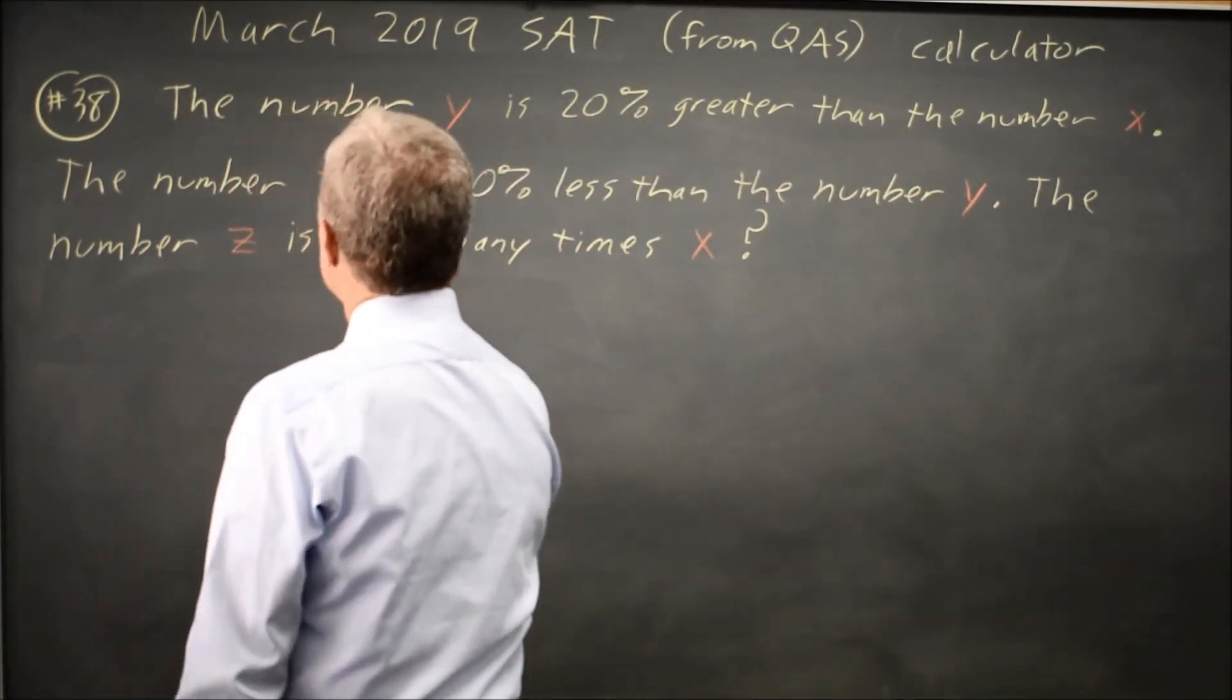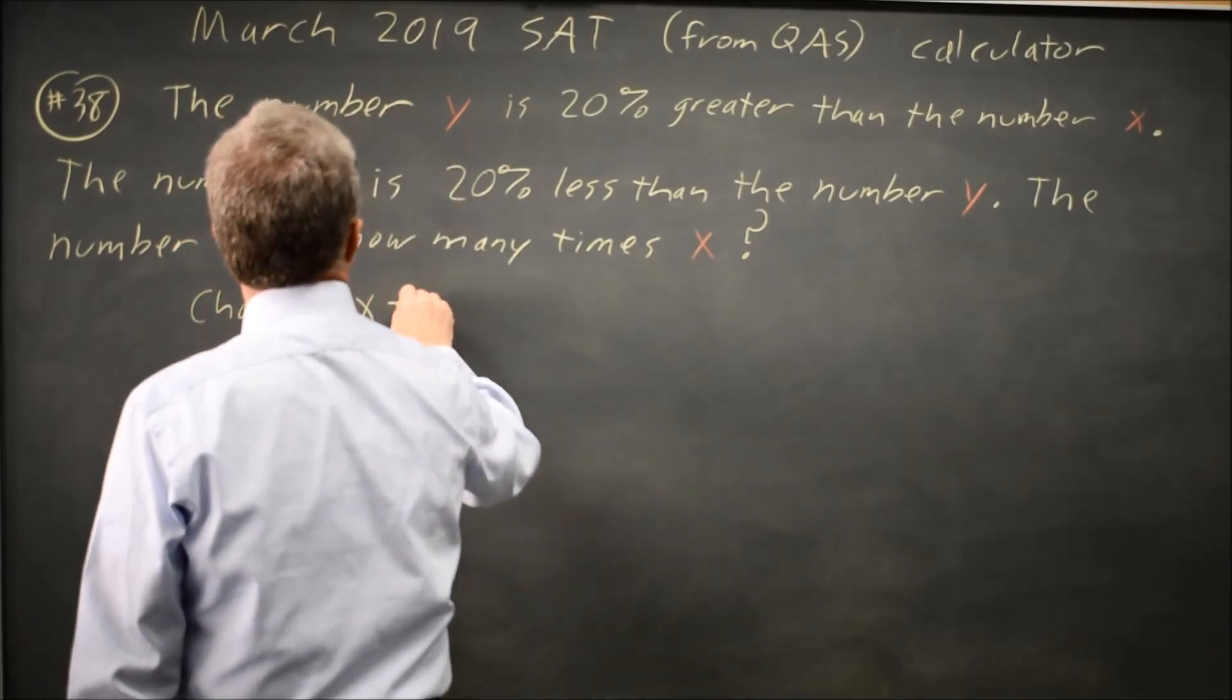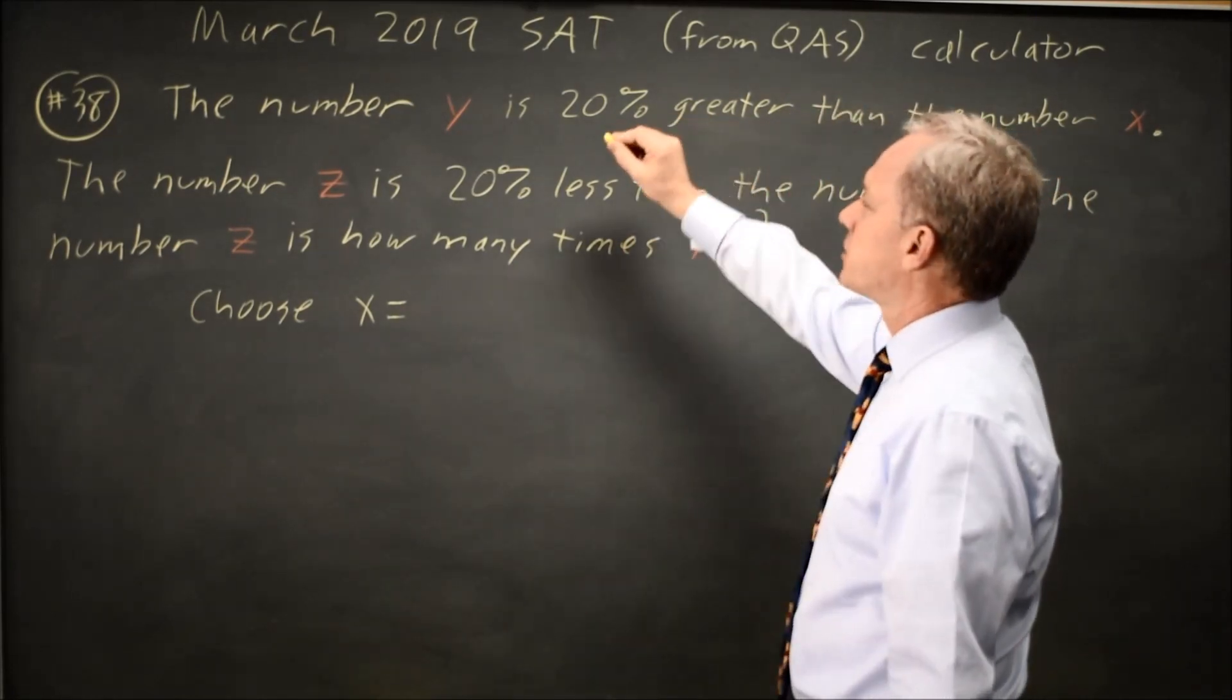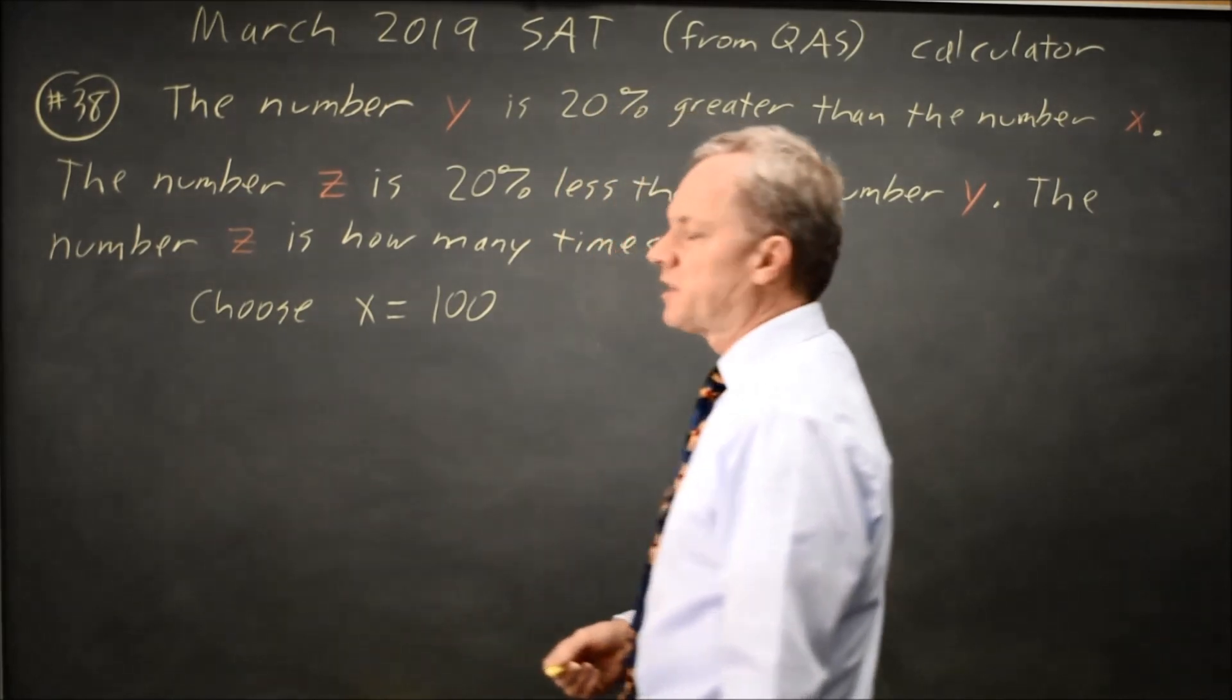For this type of problem, I like to make up a number. I'm going to choose a value for X since that's what we start with, and then we add 20% to that to get Y. I'm going to choose 100 because we're good at percents of 100.